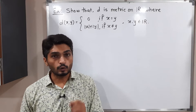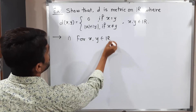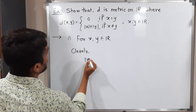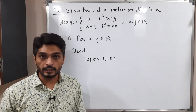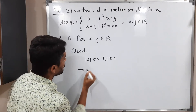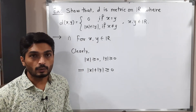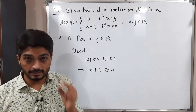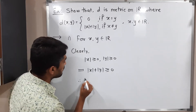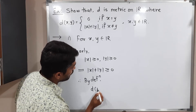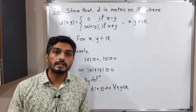The first condition is that D should be non-negative. Taking two points X, Y belonging to ℝ, clearly |X| ≥ 0 and |Y| ≥ 0, since applying the modulus cannot give a negative value. Adding them, |X| + |Y| ≥ 0. Combined with the case where D(X,Y) = 0, we never get a negative value. Therefore, by definition, D(X,Y) ≥ 0 for all X, Y ∈ ℝ. This proves the first condition.